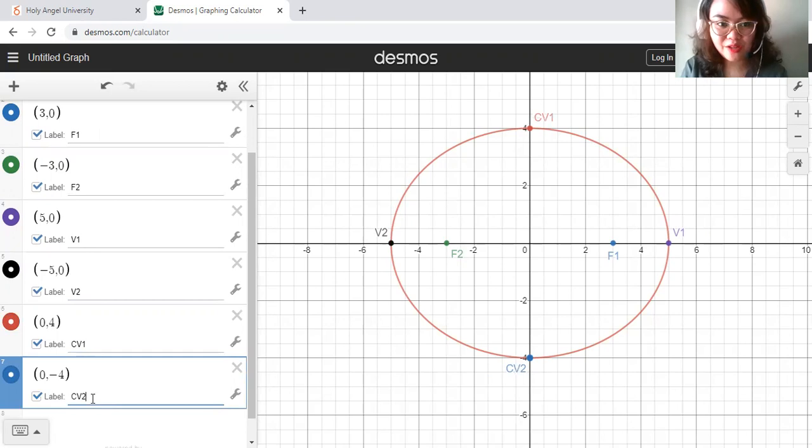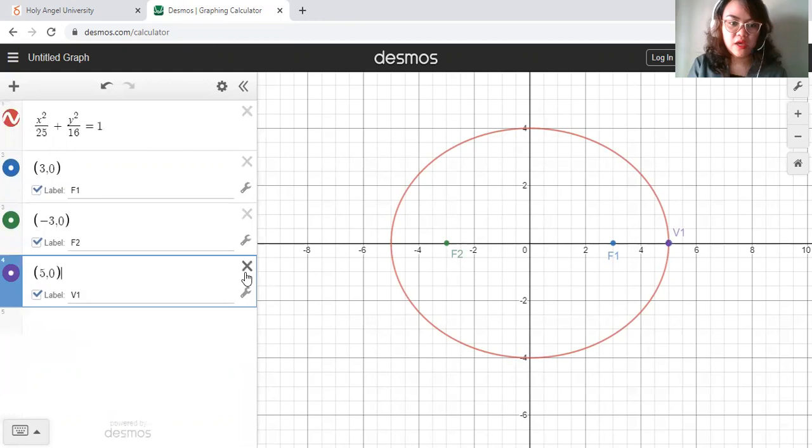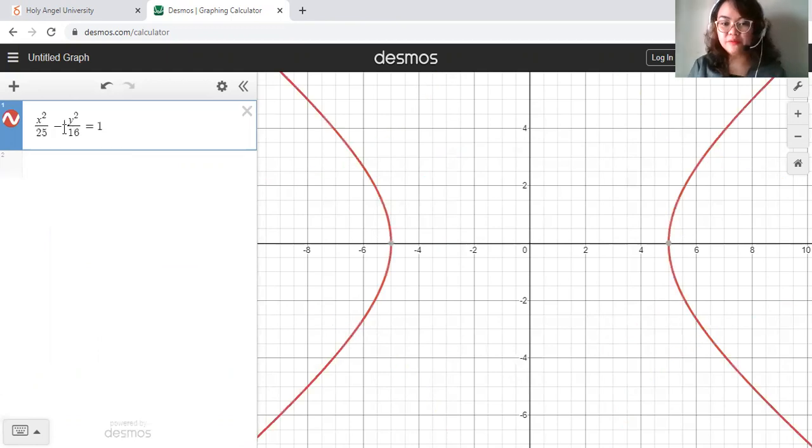Let's clear all of this and let's move on to hyperbola. Let's change our equation to subtraction. This would now be our hyperbola.